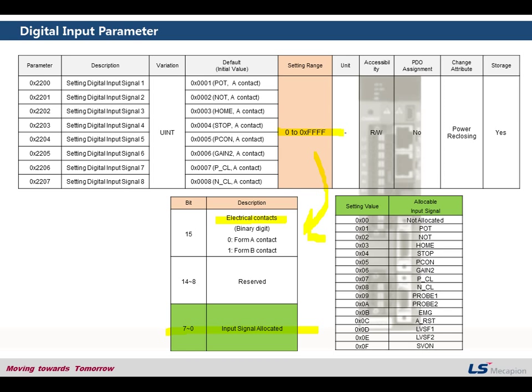And this value consists of electrical contacts and allocated signal. And this allocated signal is here, you see. So you can see the 15 functions, 15 functions goes into this 7 to 0 bits. And you are going to set this value with this one and this one.